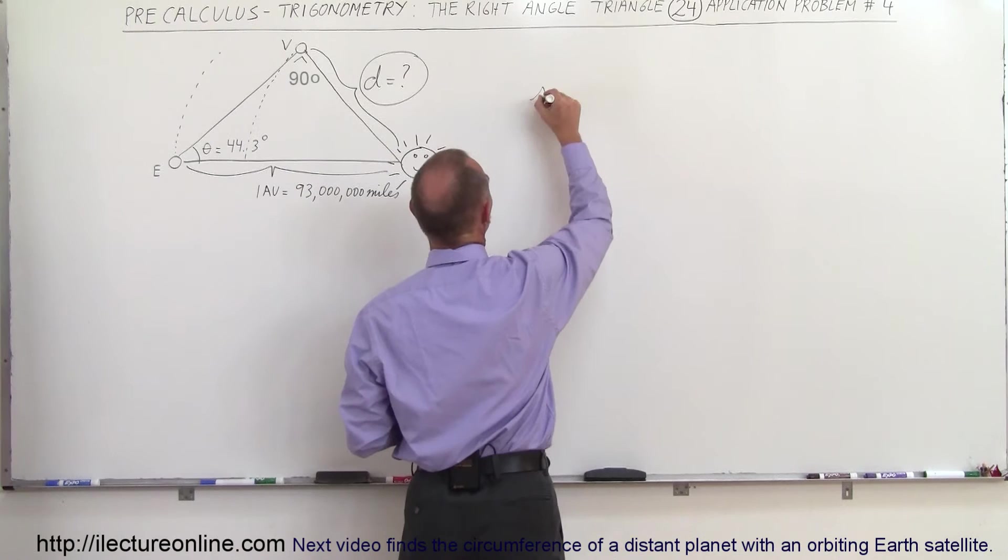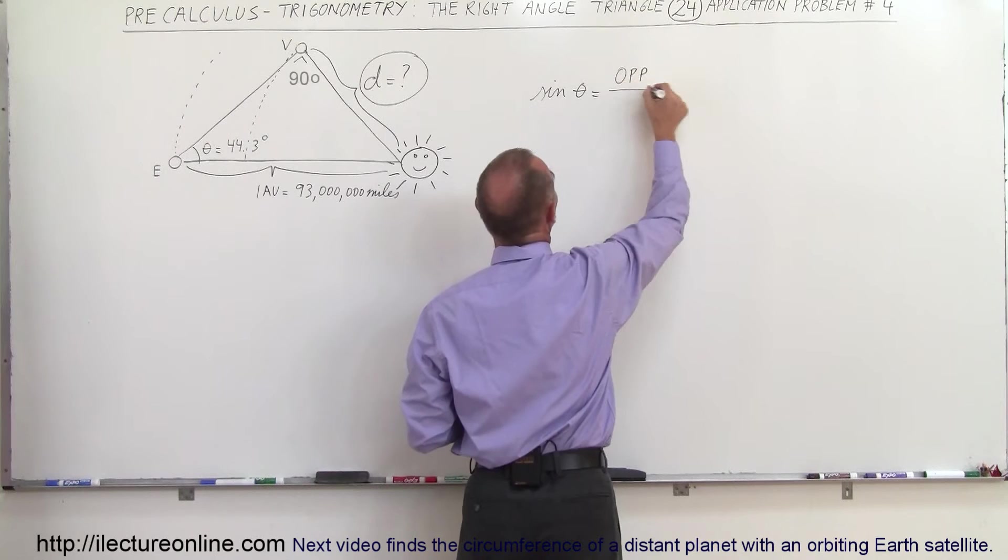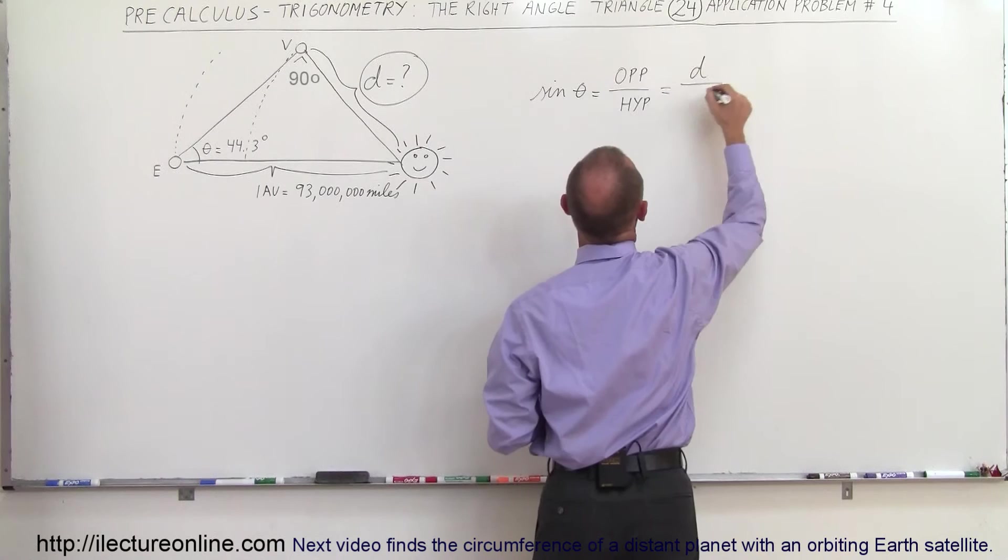So we can say that the sine of theta is equal to the ratio of the opposite side divided by the hypotenuse. In this case the opposite side is equal to d and the hypotenuse is one astronomical unit or 93 million miles.